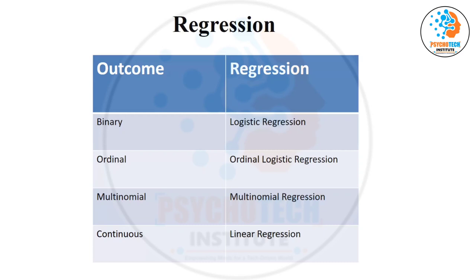Regression analysis — they may ask you, putting a condition, a few conditions, and which regression is appropriate. So the first and foremost thing for regression: the type of regression only depends on your outcome measures, not the exposure. So if they give you a condition like your outcome variable is binary, your exposure variable has one binary and one continuous variable — which regression analysis is appropriate?